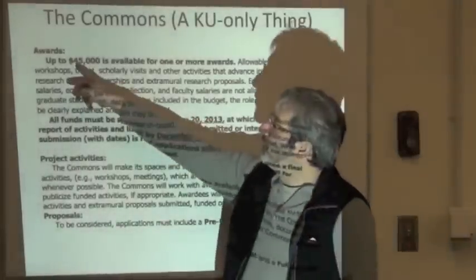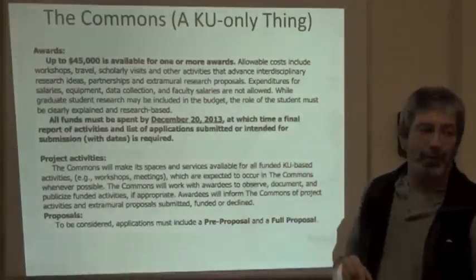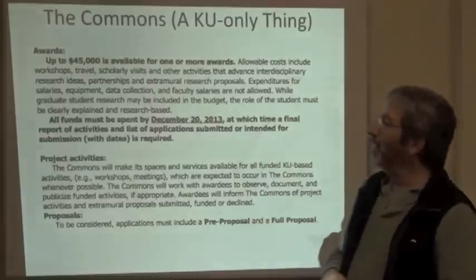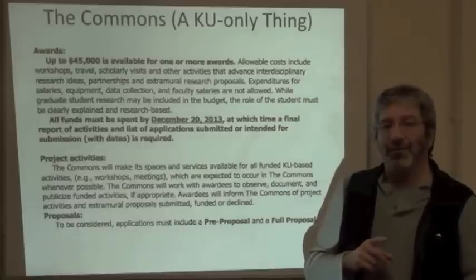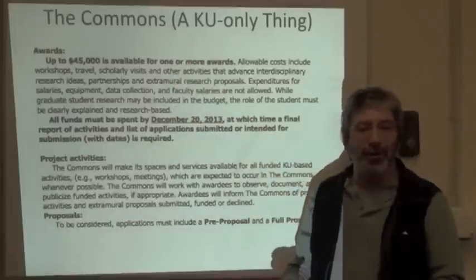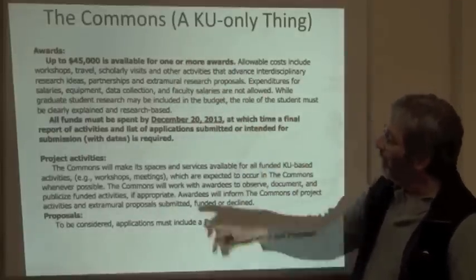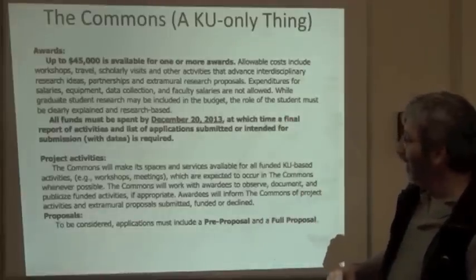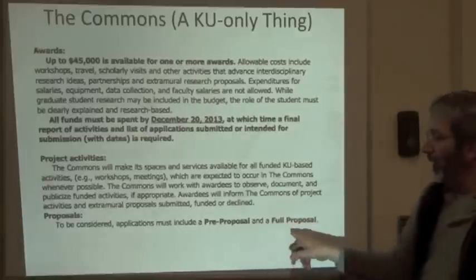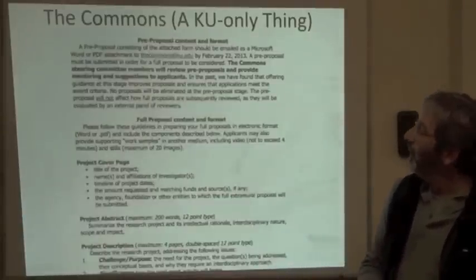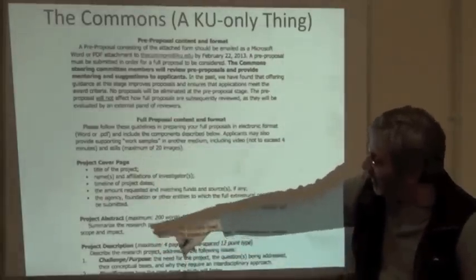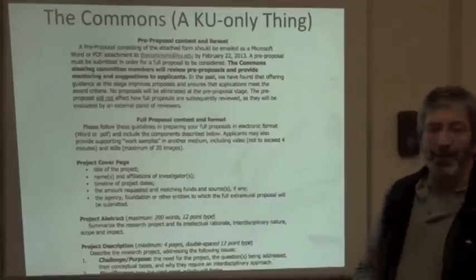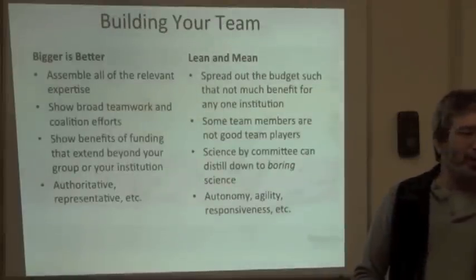Up to $45,000 is available for one or more awards — right there is a strategy decision. You can ask for the full $45,000, or you might ask for $15,000 and think that way the agency can fund three grants. You may want to consult with the program officer, but you have to decide what's the best strategy. All the funds have to be spent by a specific date, so your timeline must align with the end date. To be considered, you must include a pre-proposal and a full proposal. The format includes a project cover page, abstract, and description — don't skip over these. If you ignore them, the people judging your proposal will get upset.